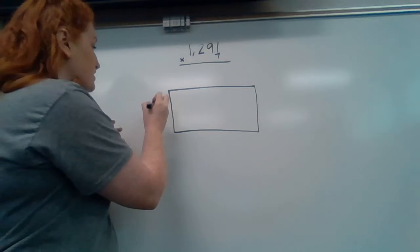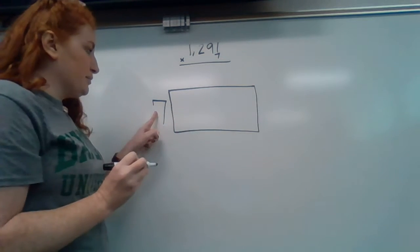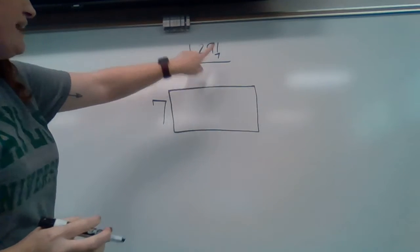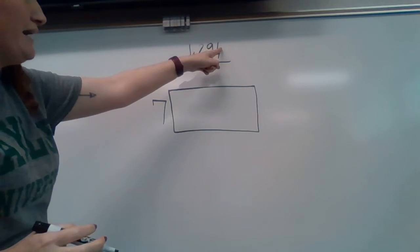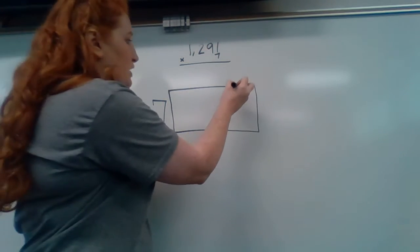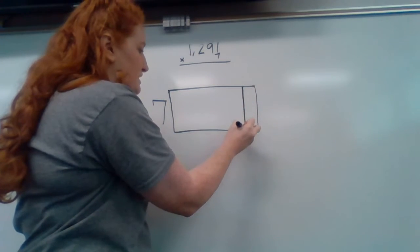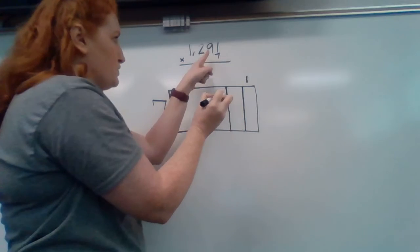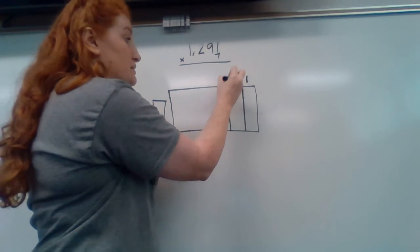So our math problem is going to be 1291 times seven. Obviously the seven is going to go over here because it's going to multiply by everything on top. So if I go from right to left, starting in the ones place, I know that this box is going to be the smallest because it is the smallest digit. Then my next box, which is a nine in the tens place, is going to be 90.